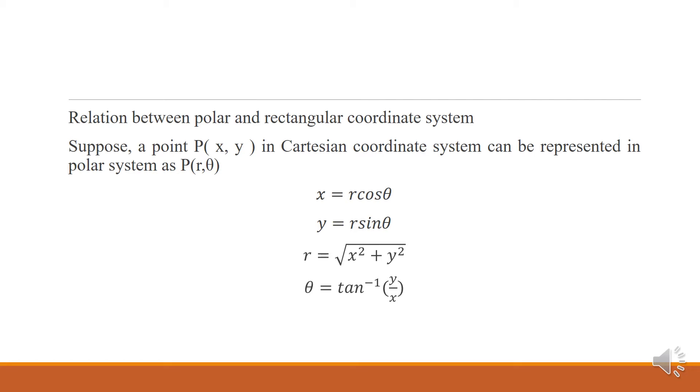Different coordinate systems include polar coordinate system, cylindrical coordinate system, spherical coordinate system, and rectangular or Cartesian coordinate system.